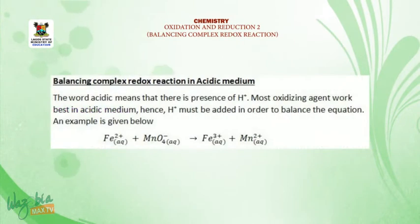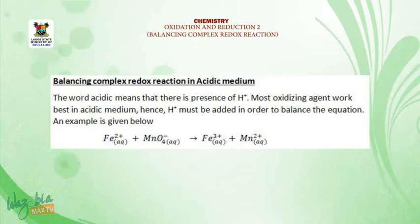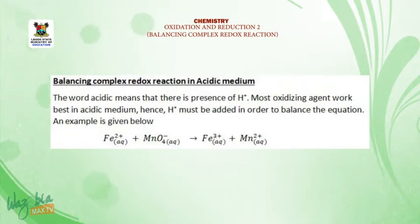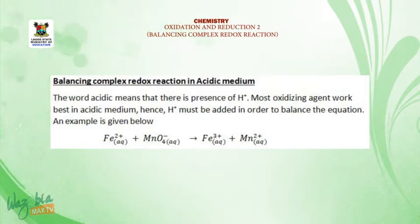Balancing complex redox reactions in acidic medium. The word acidic means that there is presence of hydrogen ions. Most oxidizing agents work best in acidic medium. Hence, hydrogen ions must be added in order to balance the equation. An example is given: Fe²⁺ + MnO₄⁻ → Fe³⁺ + Mn²⁺.